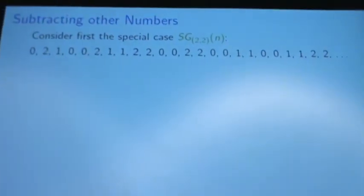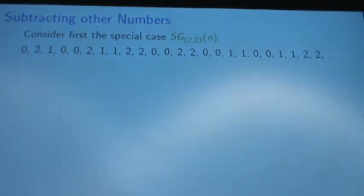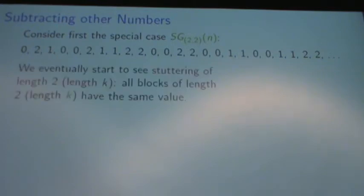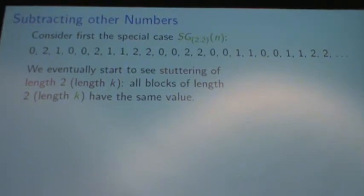I want to start by talking about a special case. This is some data for the case where we subtract 2 and divide by 2. When it first starts, we don't notice much of a pattern and it seems fairly scattered. But eventually, pretty quickly, we start getting this repetition. We have these blocks of length 2 that always have the same value. And this isn't a fluke about the first 30 terms — this really does continue throughout.